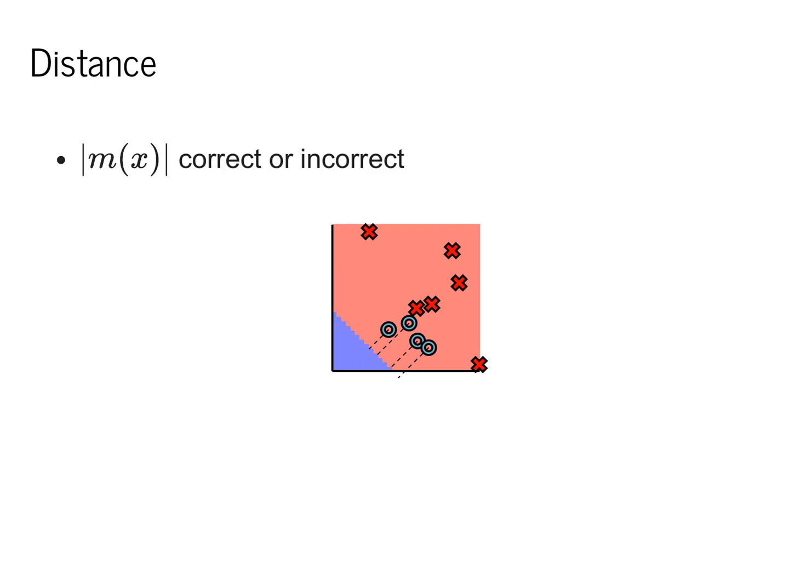To do this, we'll consider what M is actually telling us. When we take in a point X and make a prediction M, the final value is telling us both whether we got the point correctly classified and also how far we were from the underlying decision we wanted to make.